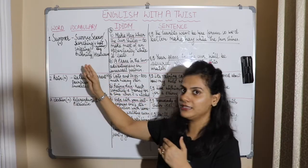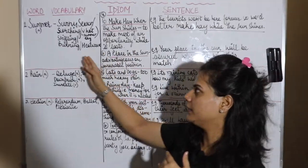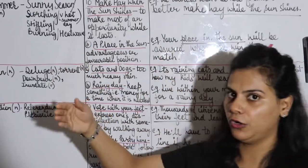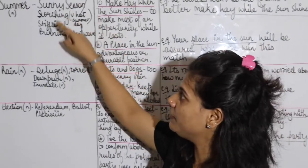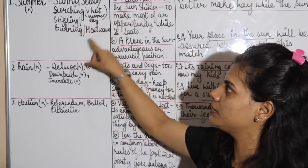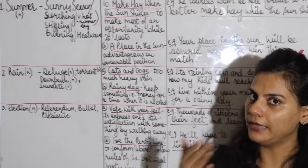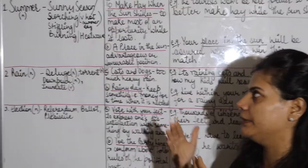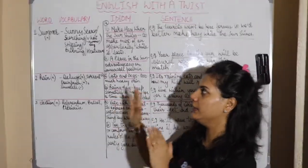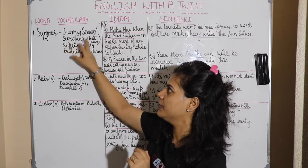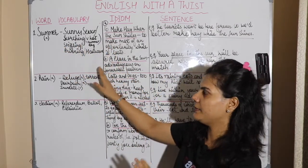Another word is 'stifling' — S-T-I-F-F-L-I-N-G. Then there's 'burning,' which we all know, and 'heat wave.' All these words stand for summers — they can be learned as synonyms or for vocabulary and spelling practice. The new words here are scorching, stifling, and heat wave.